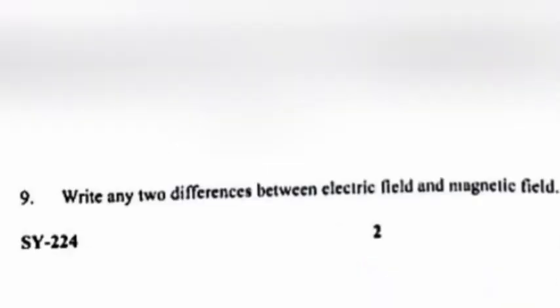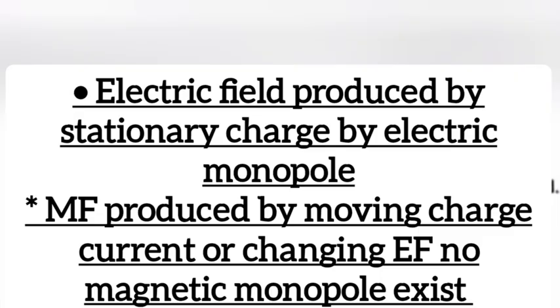Question 9: Write any two differences between electric field and magnetic field. Electric field produced by stationary charge by electric monopole. Magnetic field produced by moving charge, current, or changing electric field. No magnetic monopole exists.